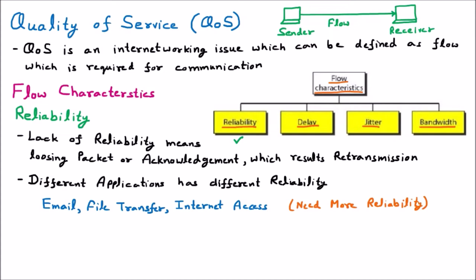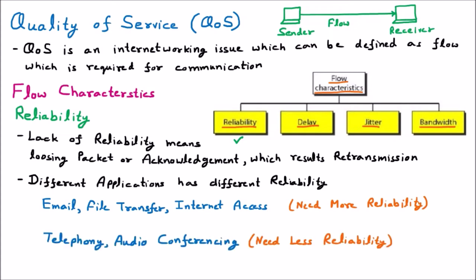For telephony or audio conferencing, less reliability is needed. If we are communicating with someone through audio or telephone, if there is some lack, it is not as important as when accessing the internet or sending a file. So in telephony or audio conferencing, reliability can be less. This is the first feature under flow characteristics that can improve quality of service.